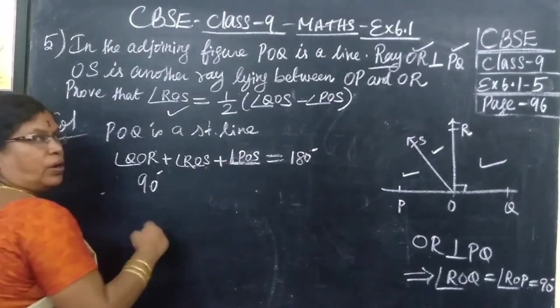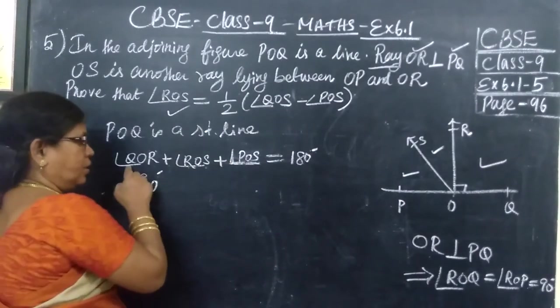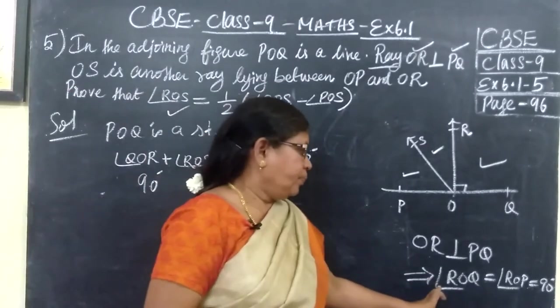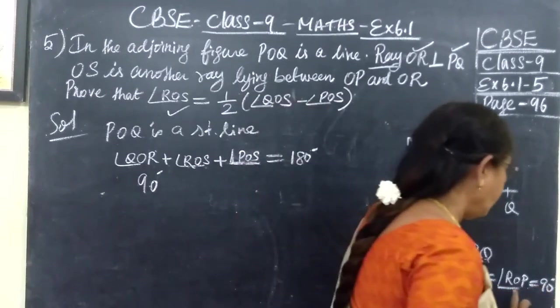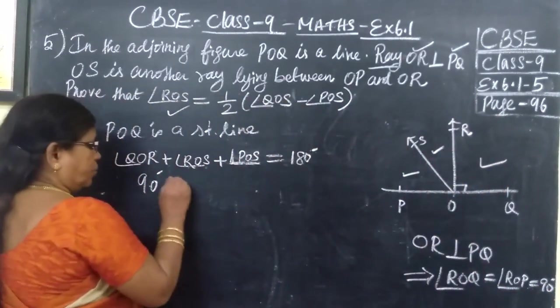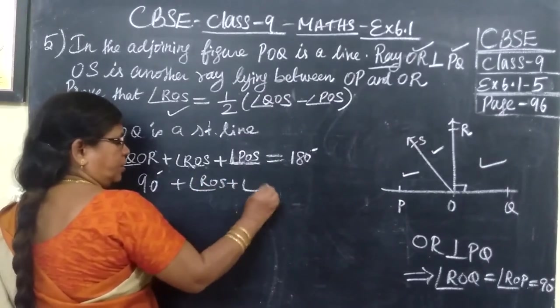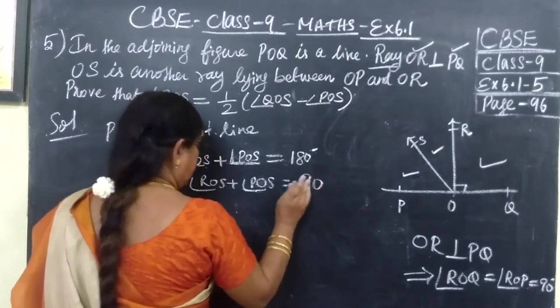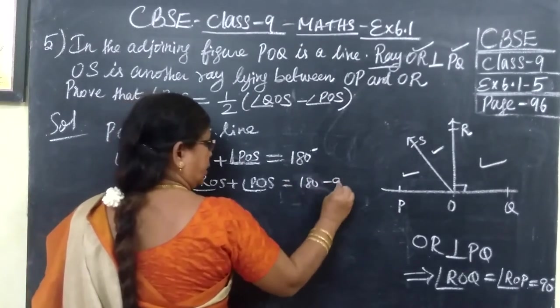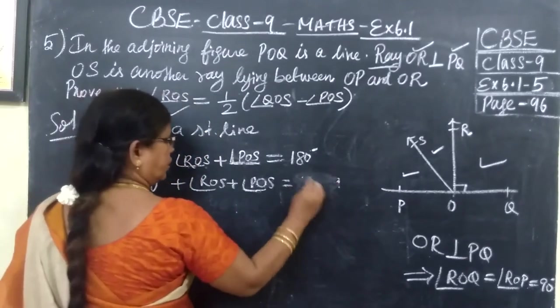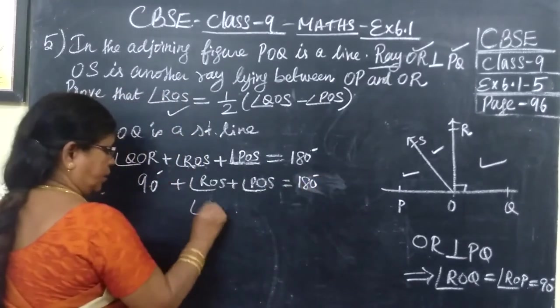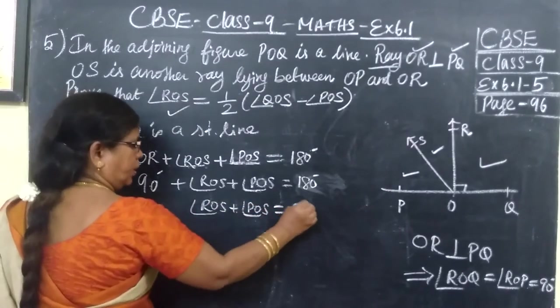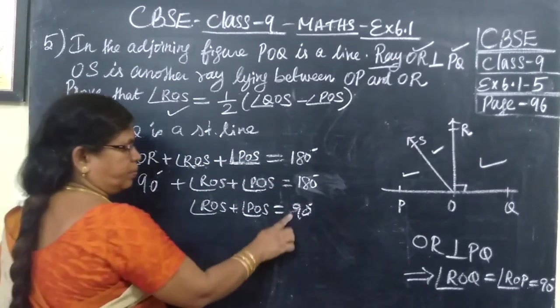Actually, sum of these two also equals 90 degrees. So no need to write this step; in another way we can write it. If it is perpendicular, if it is 90, this also equals 90. So 90 plus ROS plus POS equals 180 minus 90. Here this is 180. The next step you write ROS plus POS equals 90.